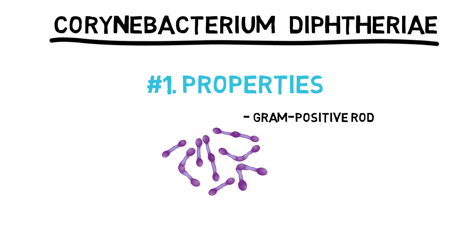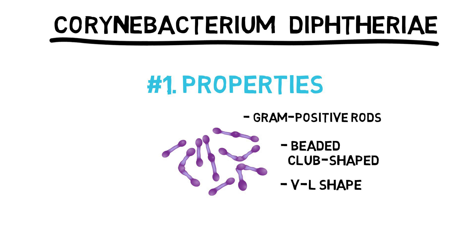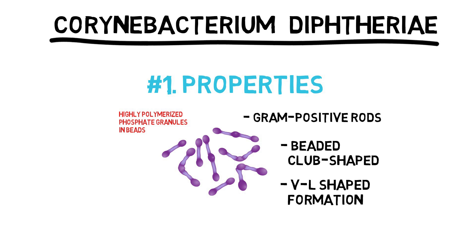Important properties. Corynebacteria are gram-positive rods that appear club-shaped, wider at one end, and are arranged in V or L-shaped formations. The rods have a beaded appearance. The beads consist of granules of highly polymerized polyphosphate, a storage mechanism for high-energy phosphate bonds. The granules stain metachromatically — for example, a dye that stains the rest of the cell blue will stain the granules red.